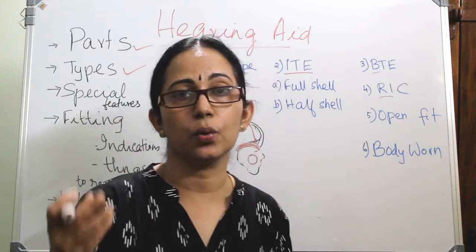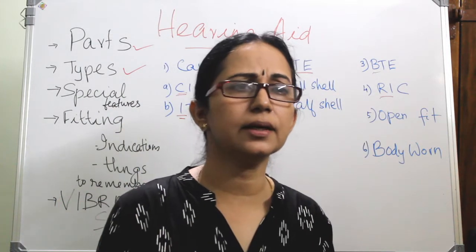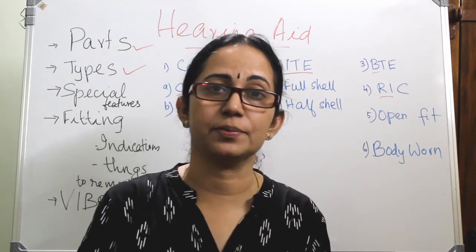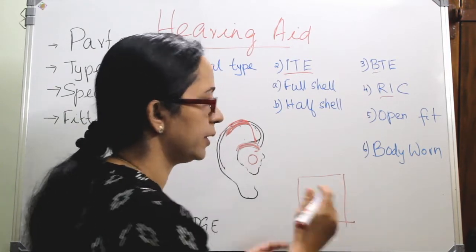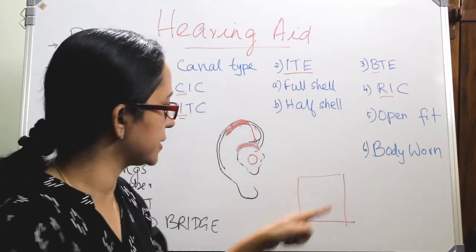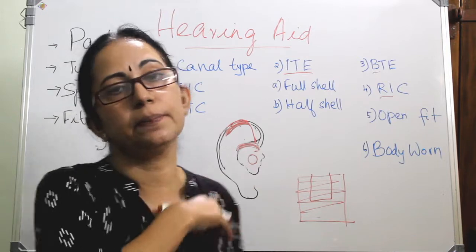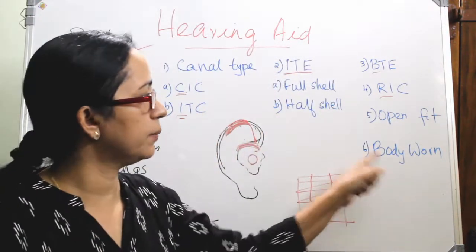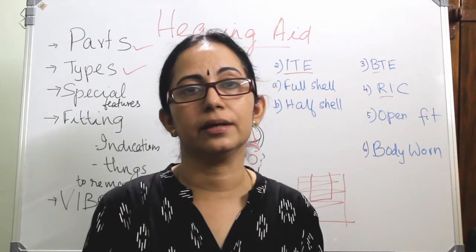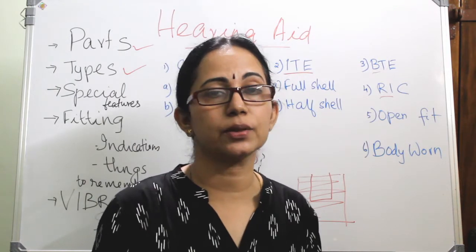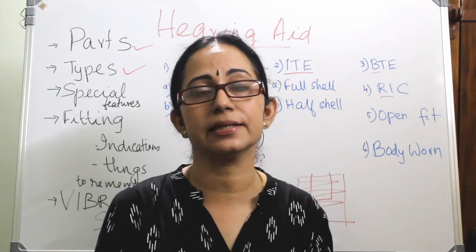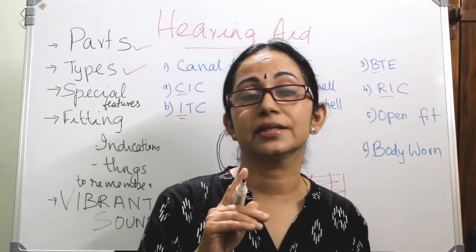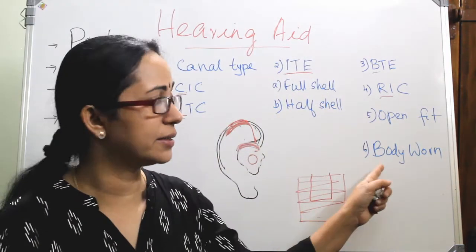Body bone is an older, possibly the earliest, type of hearing aid. The entire system — microphone, amplifier, receiver, and battery — is kept in one unit clipped into the pocket, with an ear insert connected via a wire. It costs around 1,500 to 2,000 Indian rupees, manipulation is easy, and battery life is long. Rechargeable batteries are now available for body bone aids. The main disadvantage is that cosmetically it is not appealing at all.